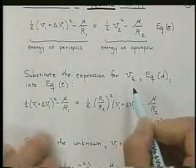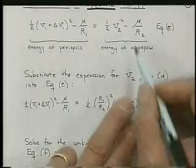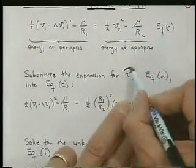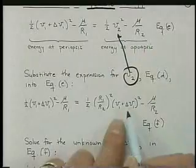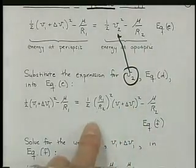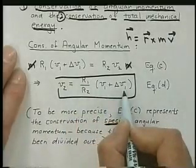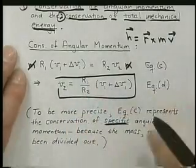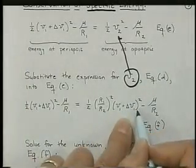If we substitute for V2 into equation E, we take this value and put it in here. Then that gives us, on the right-hand side, let's just look at that equation briefly. We're substituting this. So it's just V1 plus delta V1 and R1 over R2 is plugged in. So when you do that, you get R1 over R2 squared and V1 plus delta V1 squared.